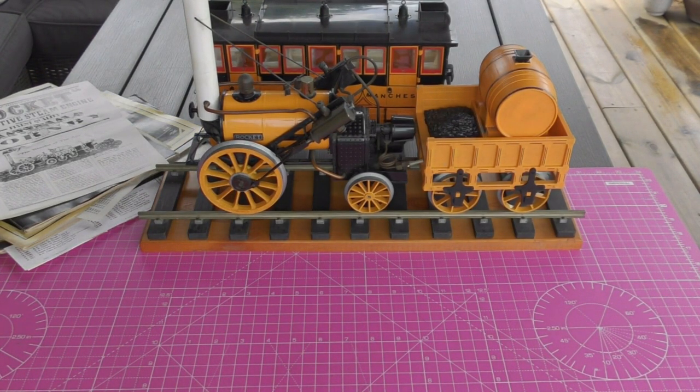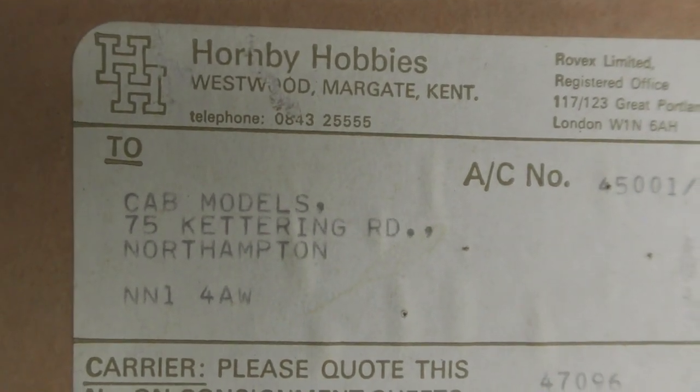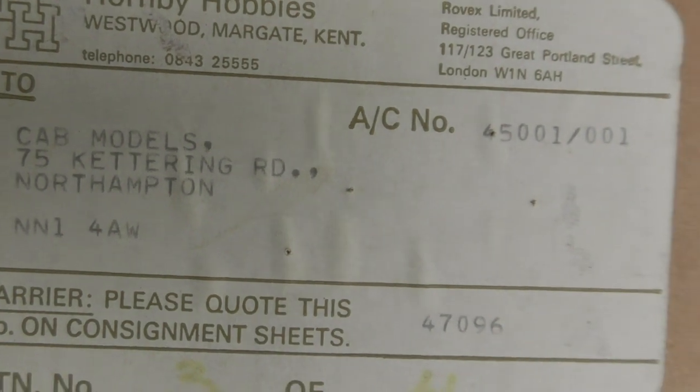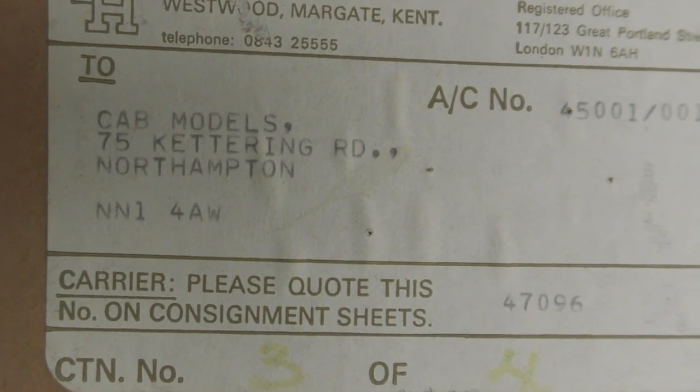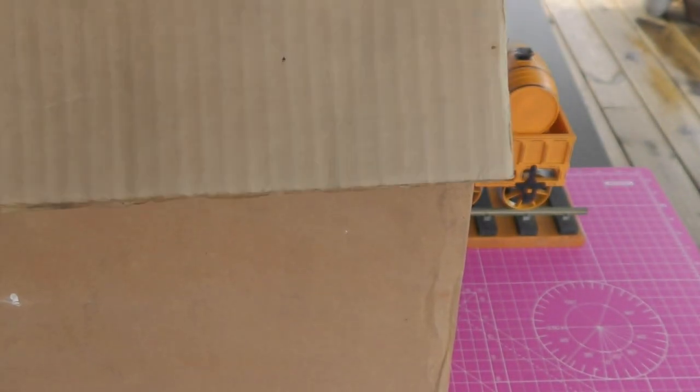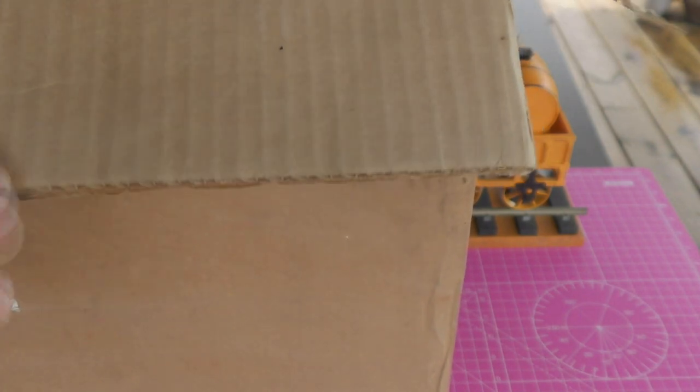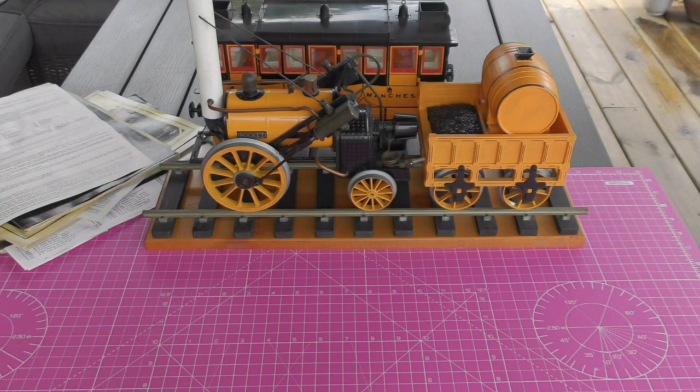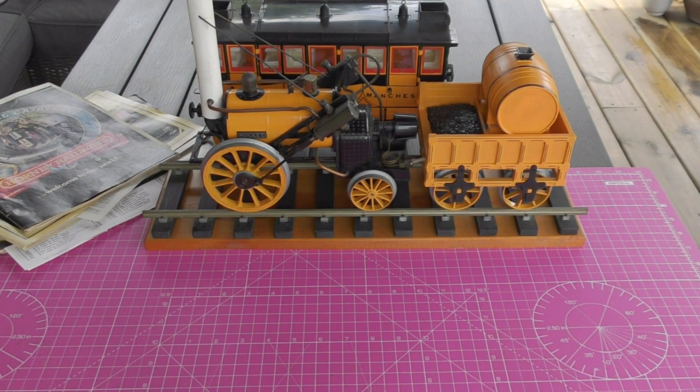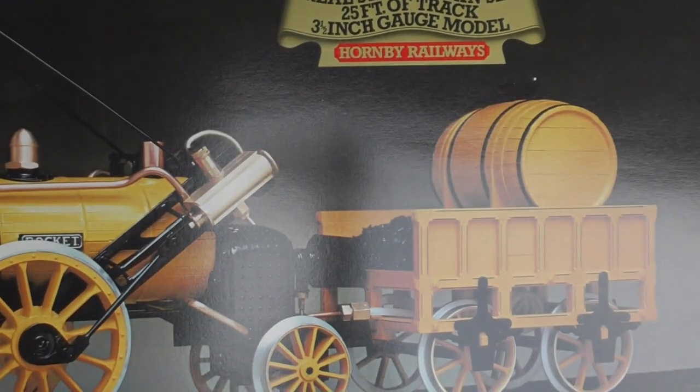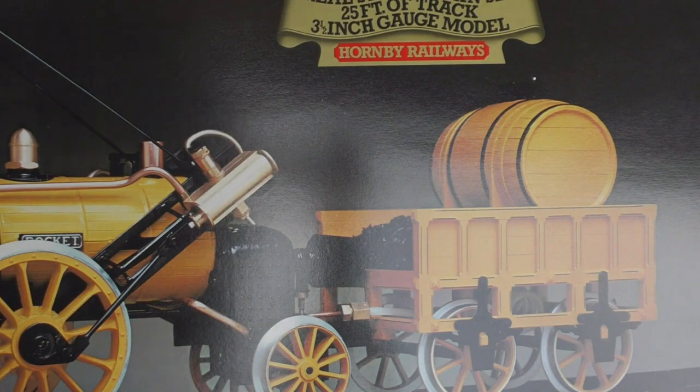I'm going to reach over now and get the main box. There is an interesting sticker on this. I don't know whether I can get this into the camera view. Hornby Hobbies Westwood Margate Kent, no date on there, but it says to CAB Models 75 Kettering Road Northampton. Well I do remember that shop, I think I've mentioned it before, and sadly one of the many model shops consigned to history.